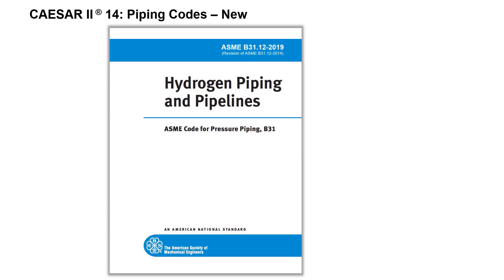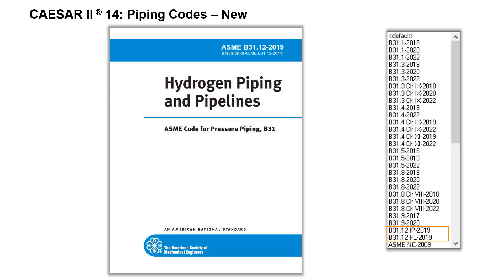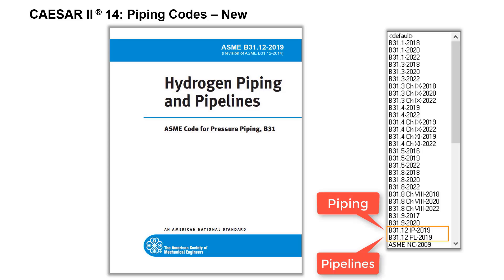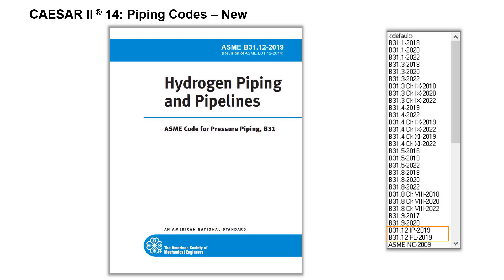ASME B31.12 Hydrogen Piping and Pipelines has been added to CAESAR 2.14. Two new piping codes are available in the Code Selection drop-down: IP, which covers industrial piping, and PL, which covers pipelines. These codes address the effect of hydrogen on material properties that are not considered for piping in ASME B31.3 and for pipelines in ASME B31.8.